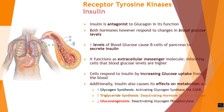Cells respond to insulin by increasing glucose uptake from blood. Additionally, insulin causes three key metabolic effects: first, it increases glycogen synthesis by activating glycogen synthase via glycogen synthase kinase beta; second, it increases triglyceride synthesis by deactivating hormone-sensitive lipase, preventing fatty acid degradation; and third, it decreases gluconeogenesis by deactivating glycogen phosphorylase, preventing glycogen degradation. These effects reflect the fed state of the human body.